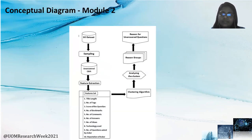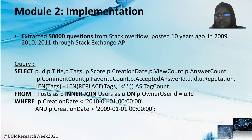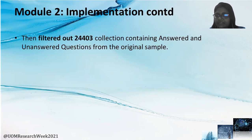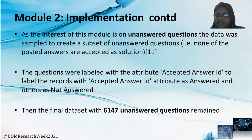This is the conceptual diagram of the analyzing reasons for unanswered questions module. 5,000 questions from Stack Overflow were extracted, posted 10 years ago in 2009, 2010, and 2011, through the Stack Exchange API. Then 24,403 questions were filtered out, containing both answered and unanswered questions from the original sample. As the interest of this module is on unanswered questions, the data was sampled to create a subset of unanswered questions, labeled with the accepted answer ID attribute as answered or not answered. The final dataset of 6,147 unanswered questions remained.